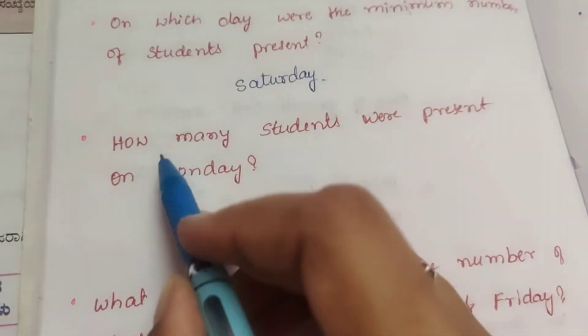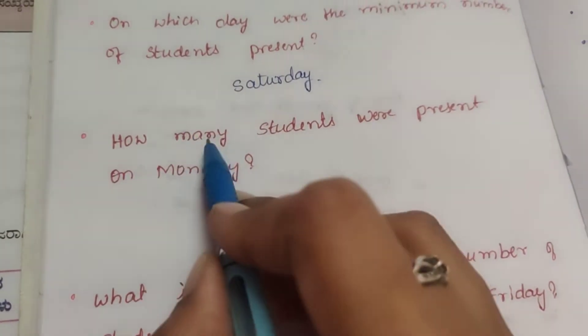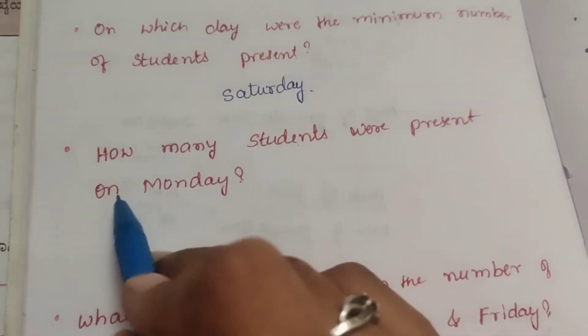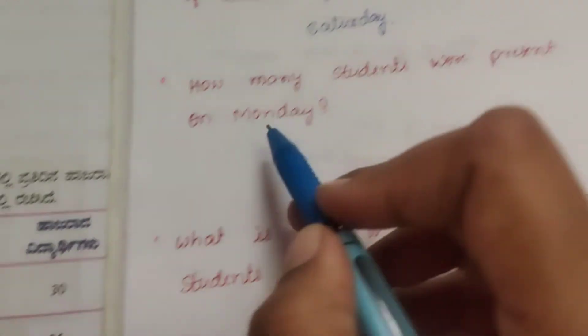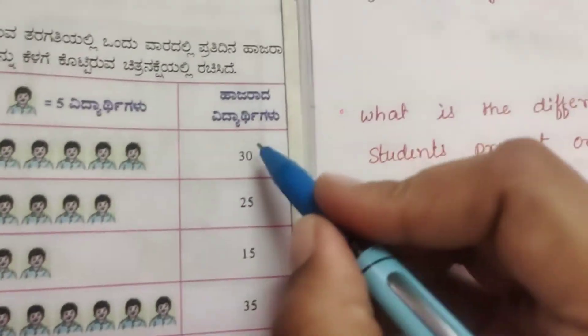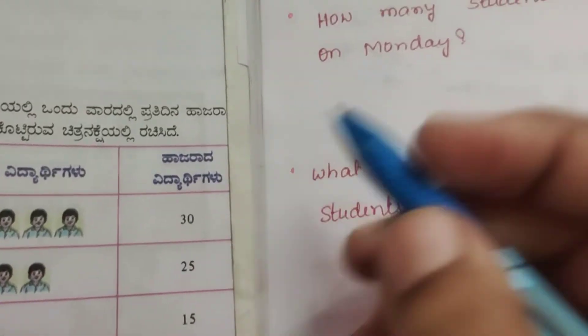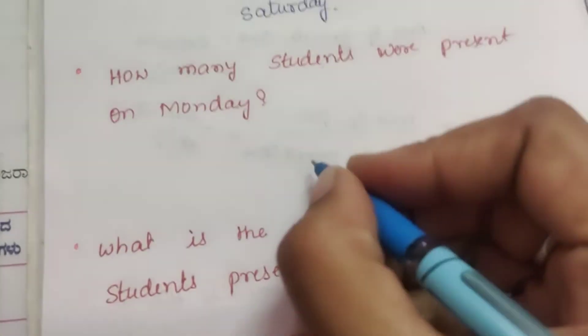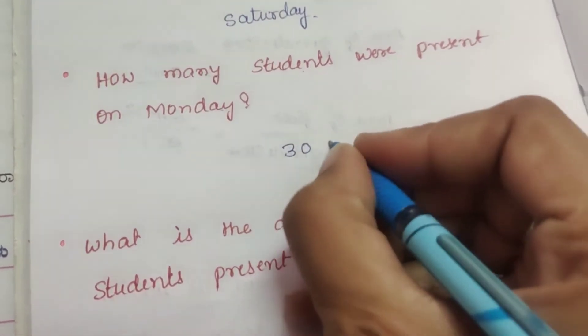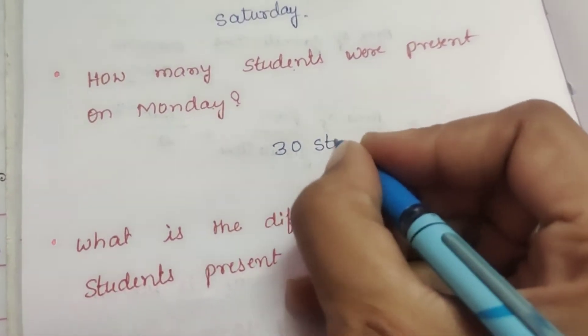Next question: How many students were present on Monday? Looking at Monday in the pictograph, 30 students were present on Monday.